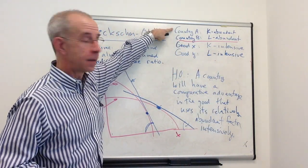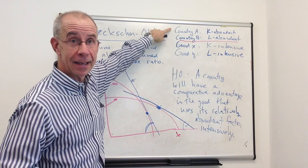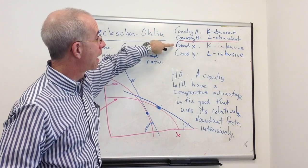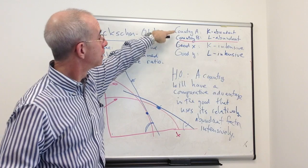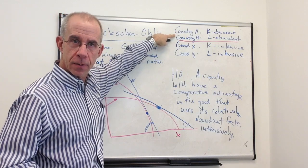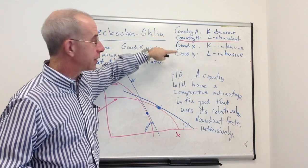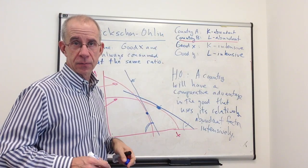Country A is abundant in capital, will have a lower relative price of the capital-intensive good. Country B, the labor-abundant country, will have a comparative advantage in the labor-intensive good.